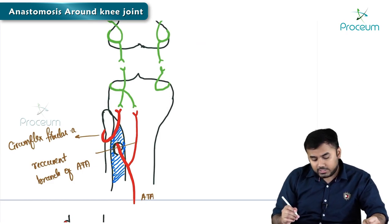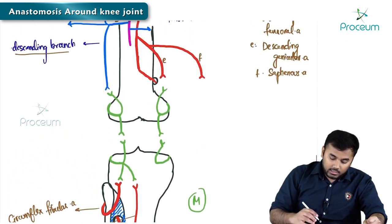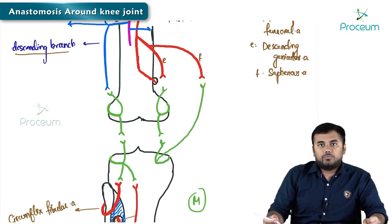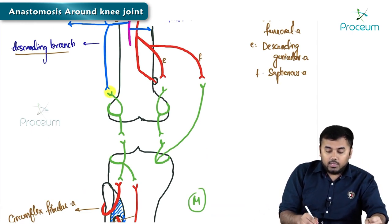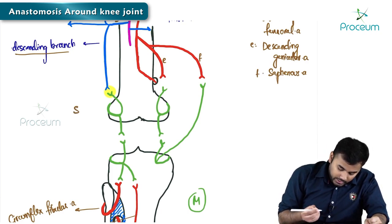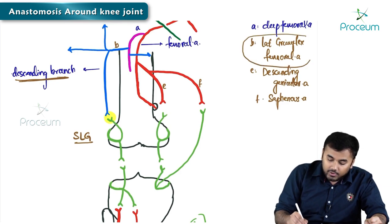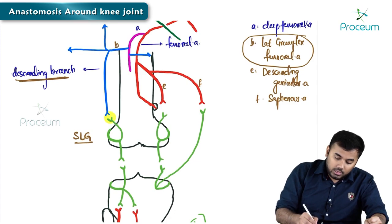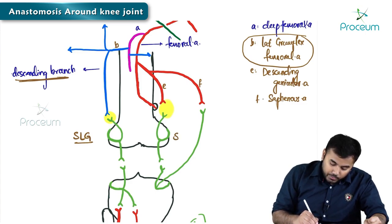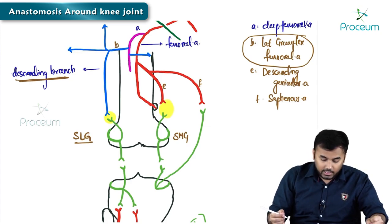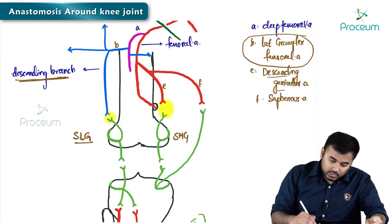Now the anastomoses are formed. This anastomosis is formed by the superior lateral genicular artery with the descending branch of the lateral circumflex femoral artery. So that is one anastomosis. The second anastomosis is formed between the superior medial genicular artery with branch E — the descending genicular artery.